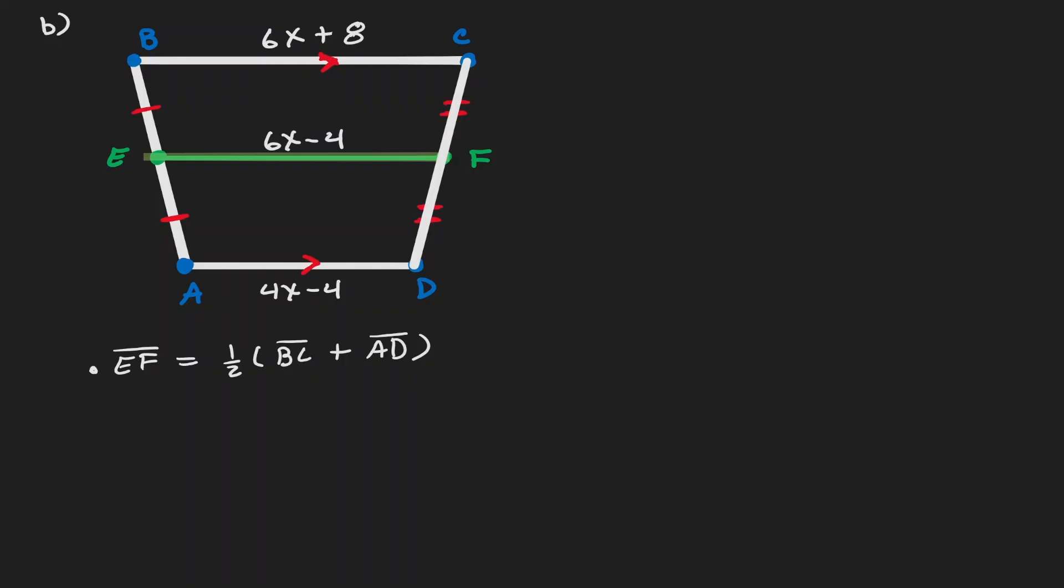EF is 6x minus 4, BC is 6x plus 8, and AD is 4x minus 4.